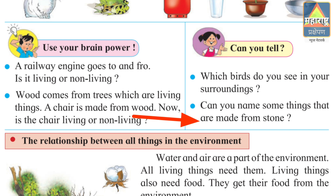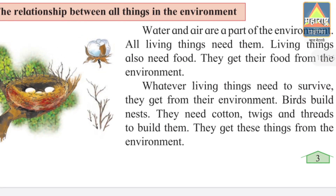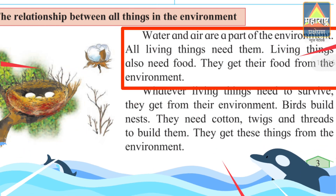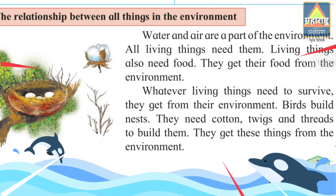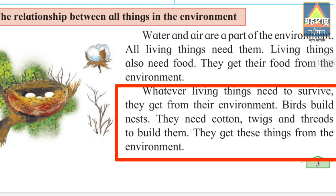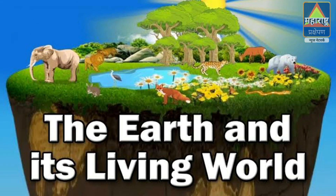Now, the relationship between all things in the environment. Water and air are a part of the environment. All living things need them. Living things also need food, just as they need air. They get their food from the environment. Whatever living things need to survive, they get from their environment.